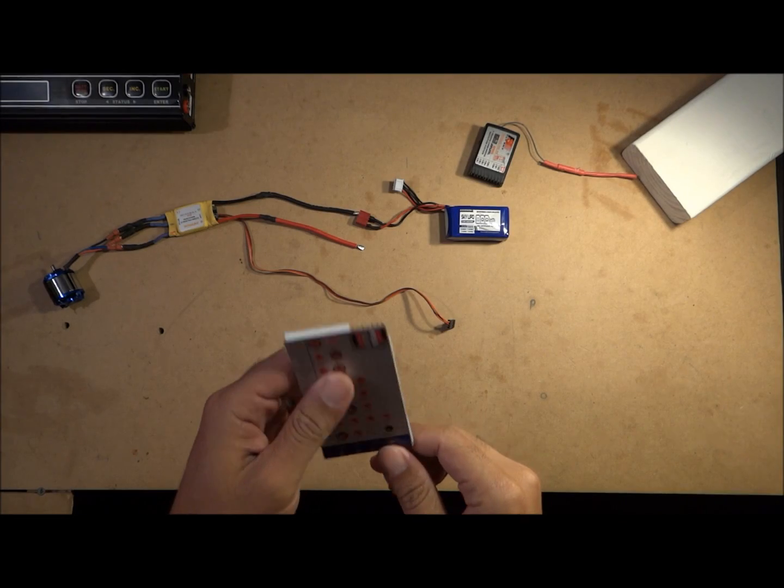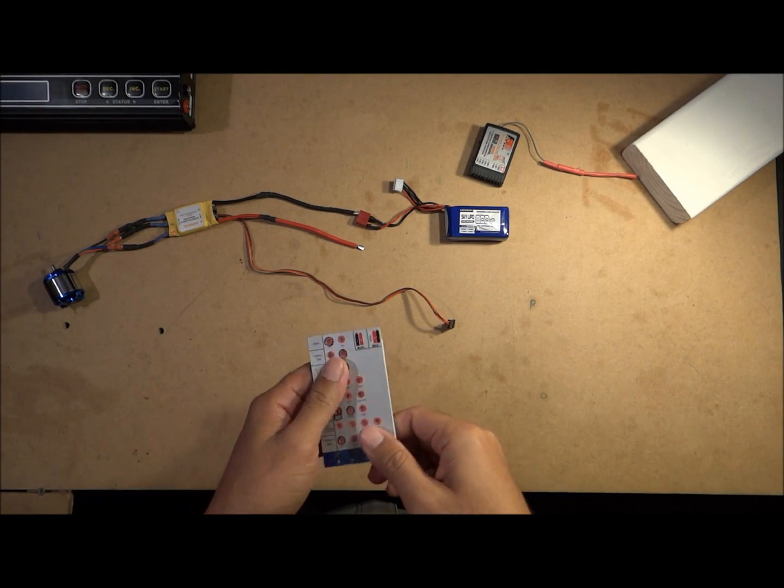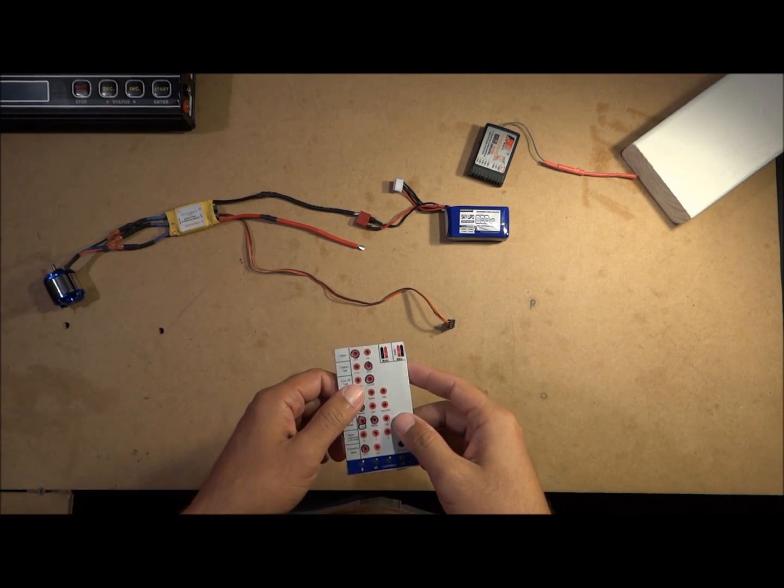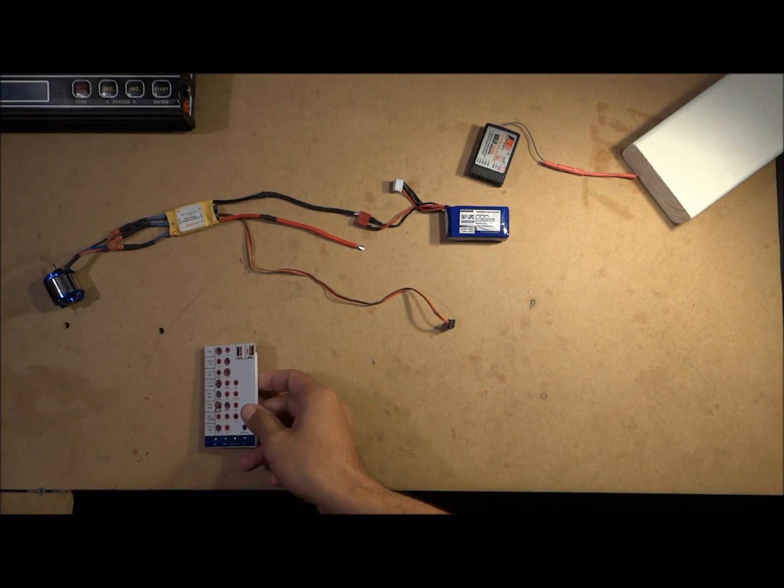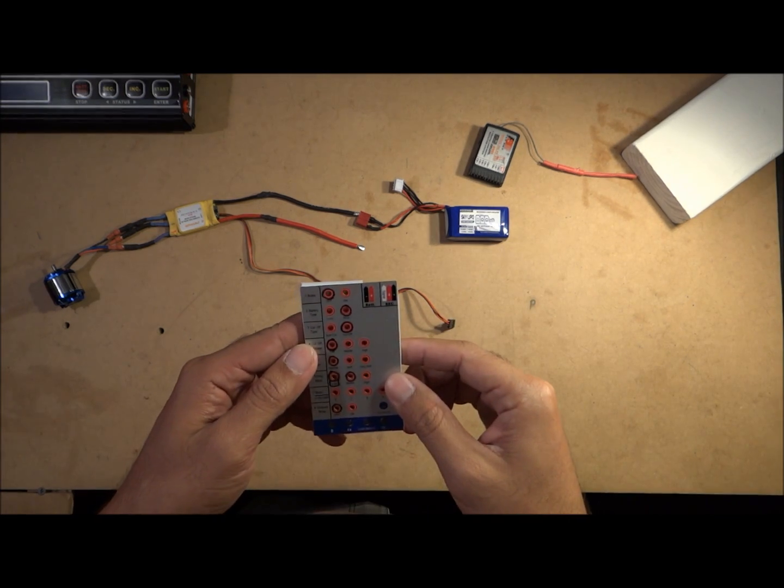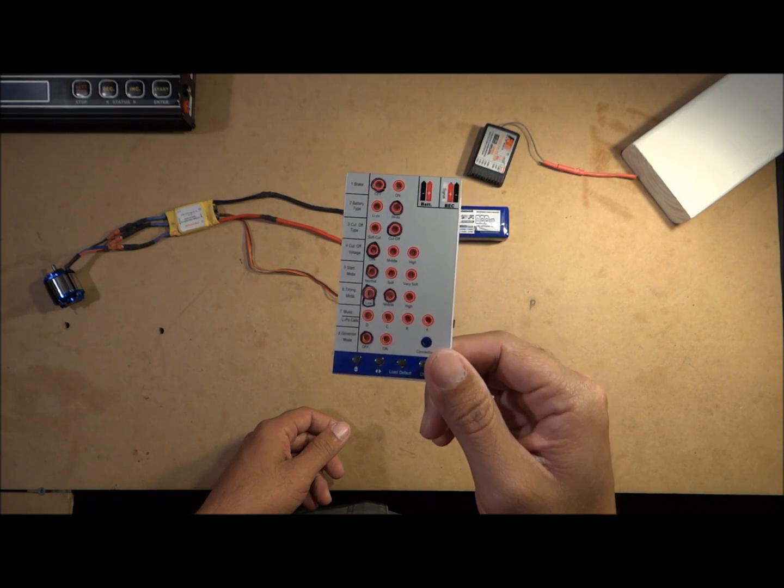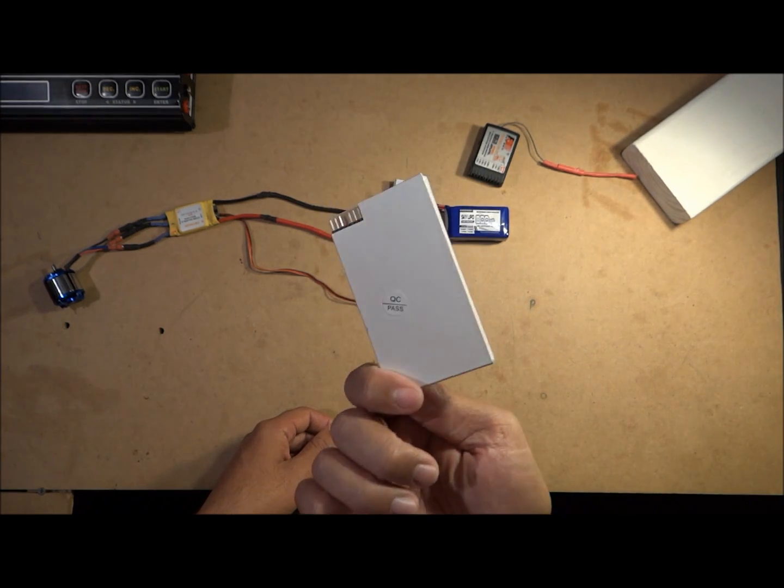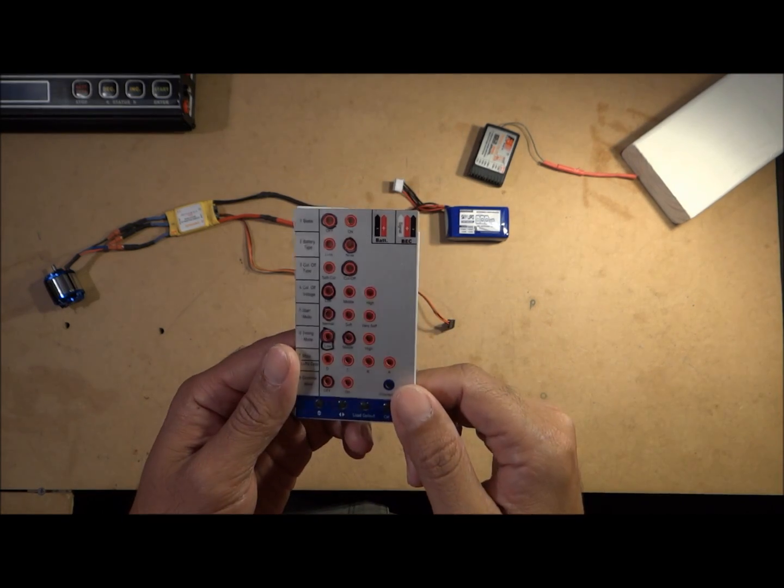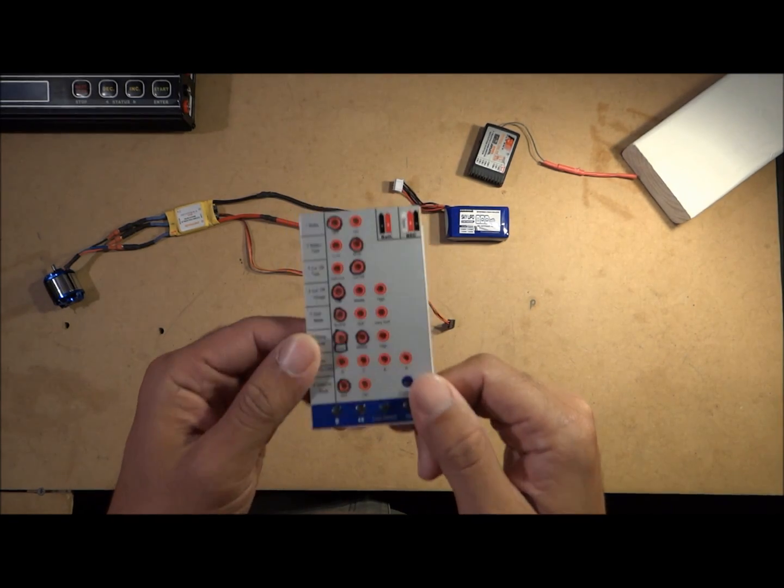What's going on everybody, this video is a tutorial on how to calibrate your ESC specifically for multirotors, quadcopters, hexacopters, that type. The best way to do this is to have one of these - it's an ESC programming card. You can get this at almost any online hobby store for about nine bucks.